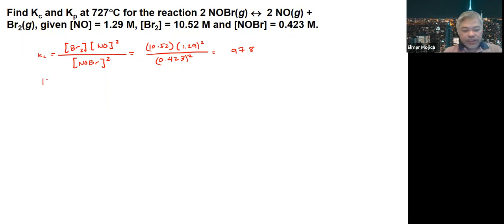Now to get Kp, use the equation Kp equals Kc times RT to the delta N. Delta N equals 3 minus 2, which is 1. For temperature, you have 727 plus 273, which equals 1,000 Kelvin.